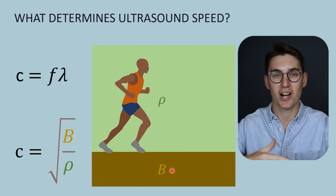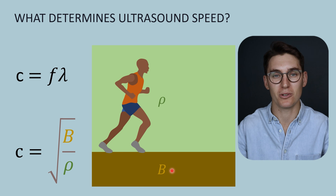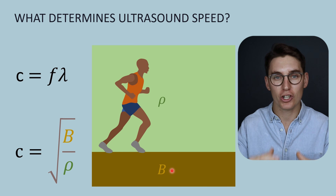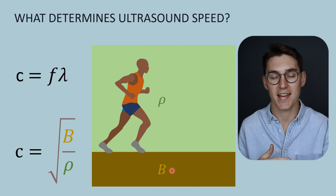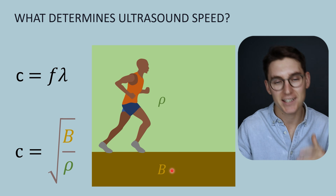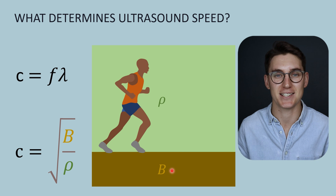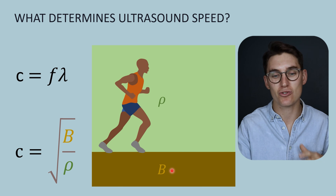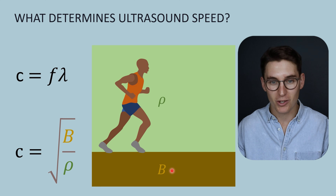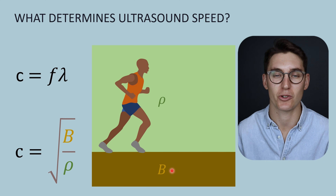If that hard ground abruptly became sand — which is more compressible and less stiff — the runner running at the same rate would start to run more slowly. The bulk modulus of the sand has decreased. Their stride length gets shorter: the frequency is the same, but the wavelength has decreased and their speed has decreased.